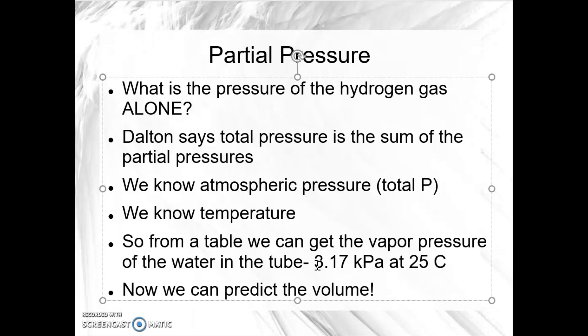Now we know the vapor pressure of water, 3.17 kPa. So how can we use this information to find the pressure of the hydrogen gas by itself? Well, that's fairly simple. Dalton's law says the total pressure is the sum of all the partial pressures. So the pressure total is equal to the pressure of H2O, which we know from our table here is 3.17 kPa, plus the pressure of the hydrogen gas. So you can use that equation to find the pressure of hydrogen gas by itself. And then you'll put that into PV equals nRT and predict the volume.